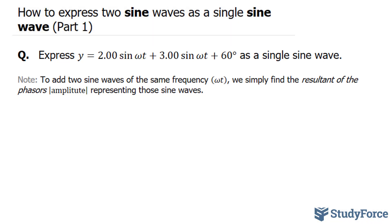This symbol, which represents the angular velocity, is the same in both terms. To add two sine waves of the same frequency, we simply find the resultant of the phasors, which are the amplitudes 2 and 3, representing those two waves.